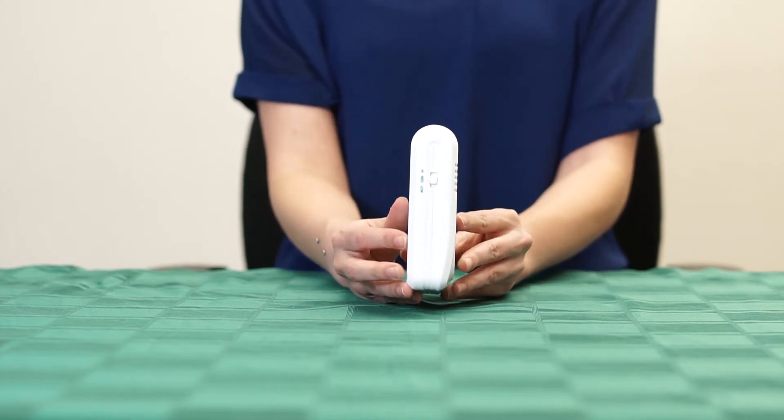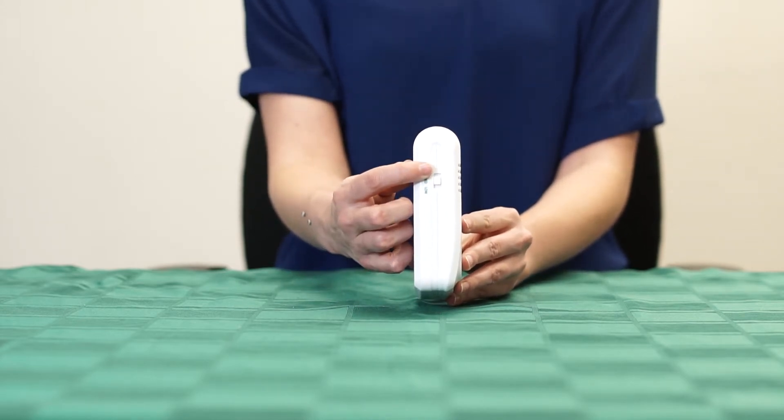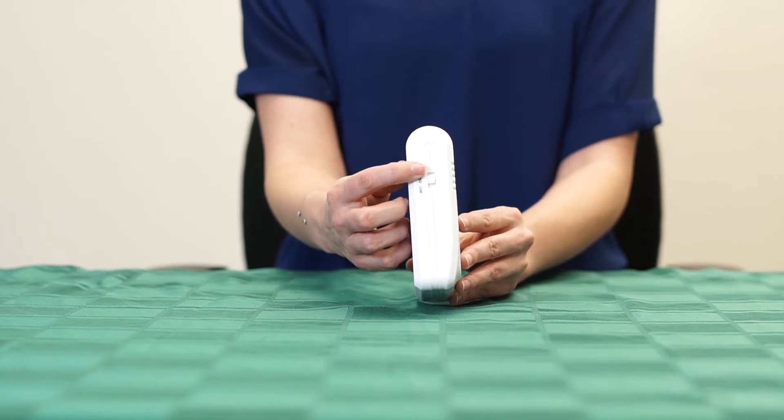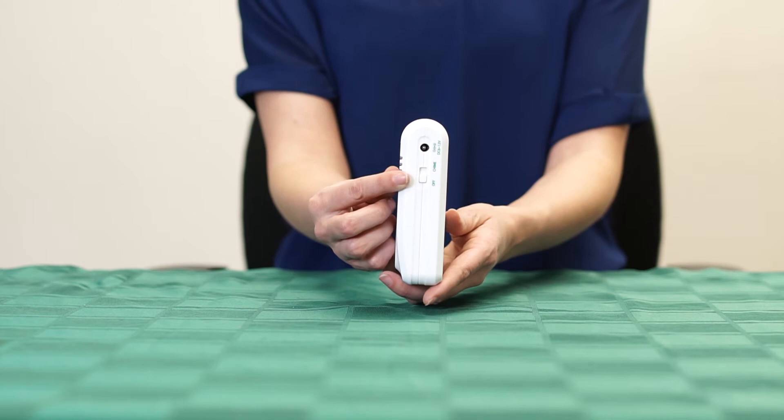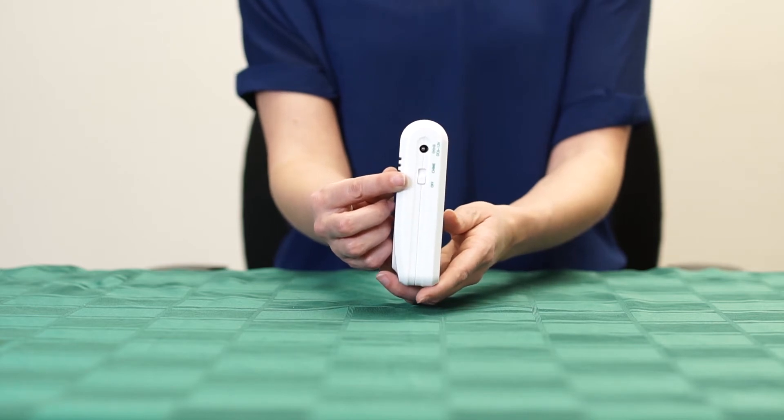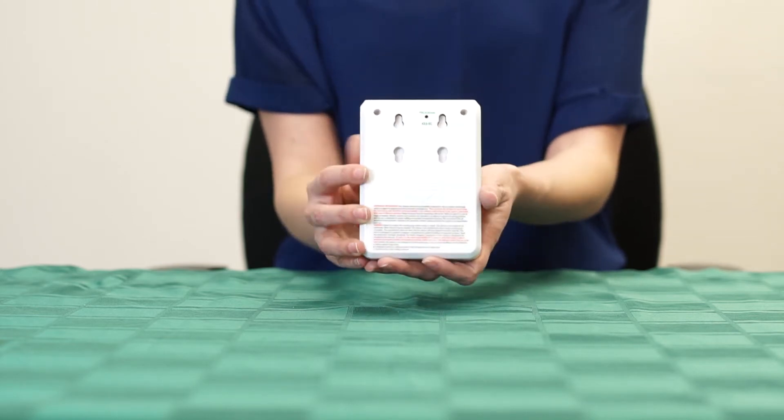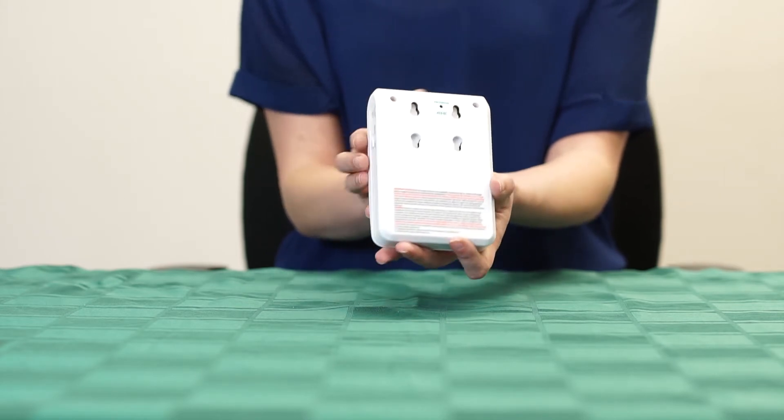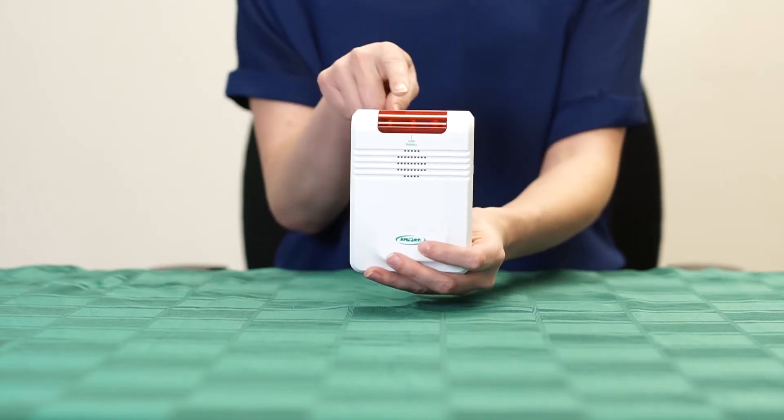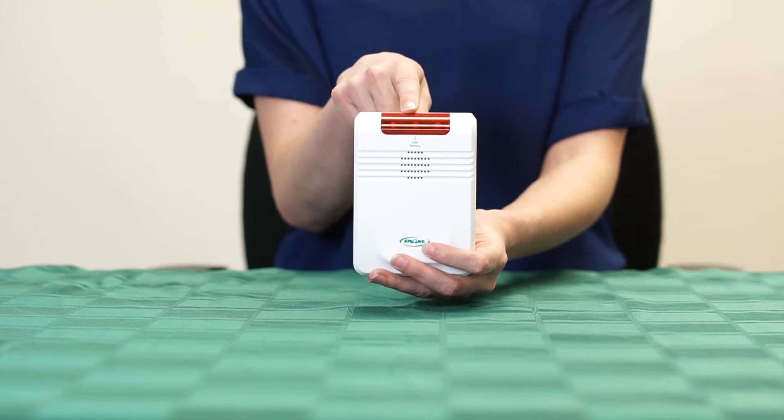The 433EC economy cordless monitor features a low, medium, and high volume control, an off and chime switch, a program button, and a low battery LED indicator.